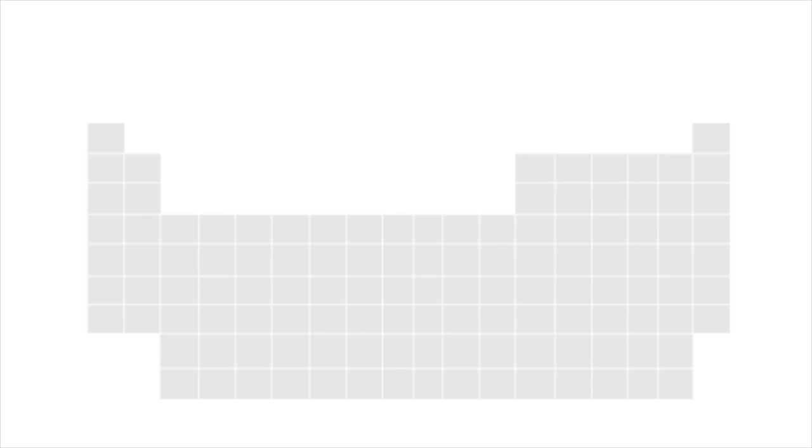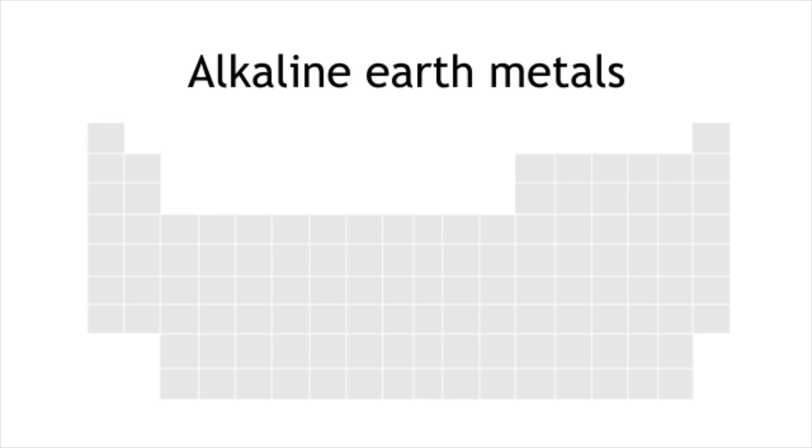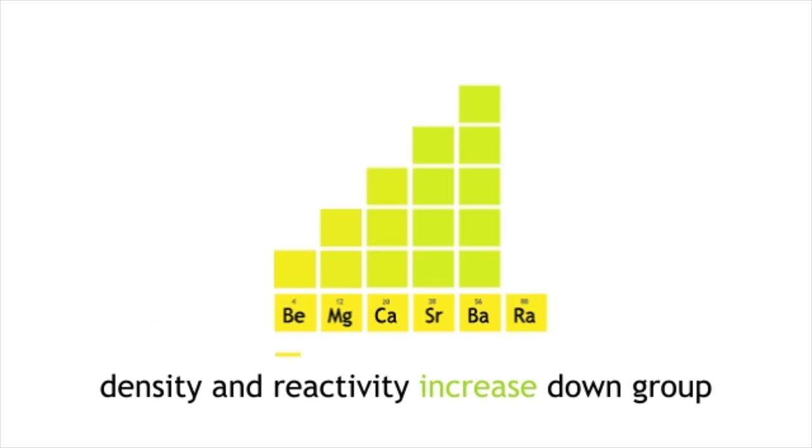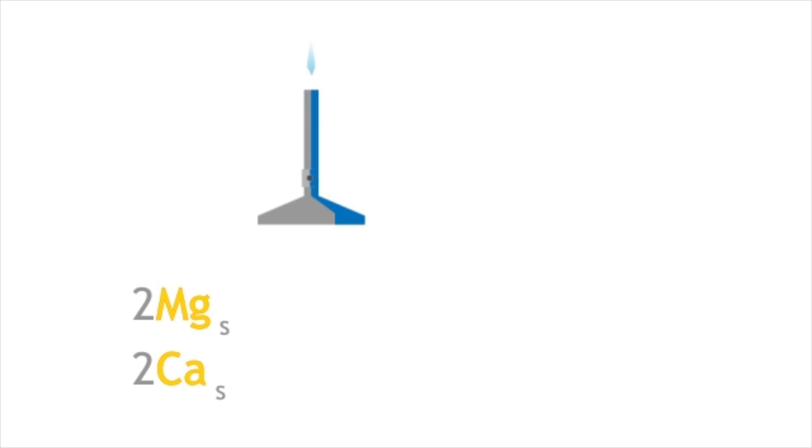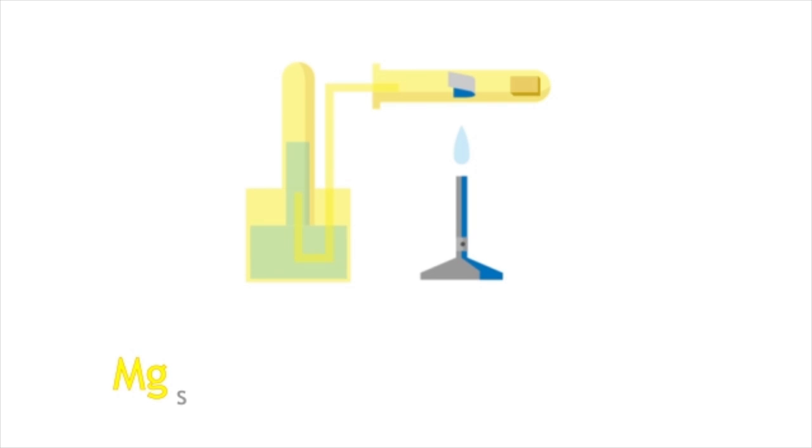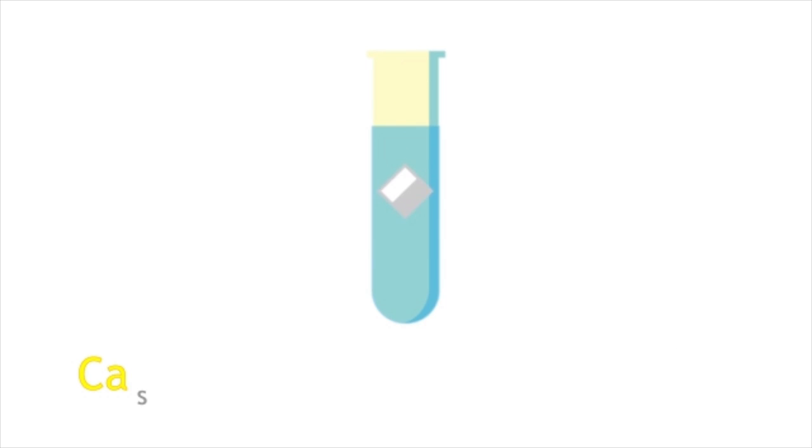In summary, the alkaline earth metals are the Group 2 metals. They exhibit similar properties and reactivity trends to the alkaline metals. Magnesium and calcium react with oxygen to form their respective oxides. Magnesium reacts with steam to produce magnesium oxide and hydrogen gas. Calcium reacts with cold water to produce calcium hydroxide and hydrogen gas.